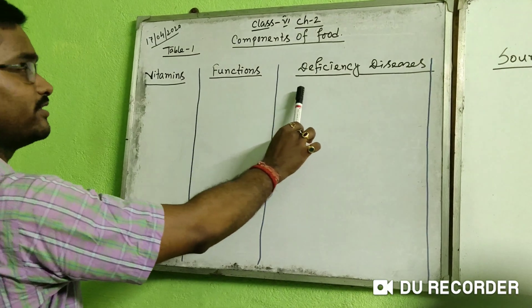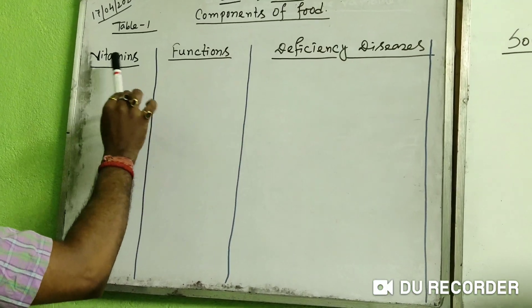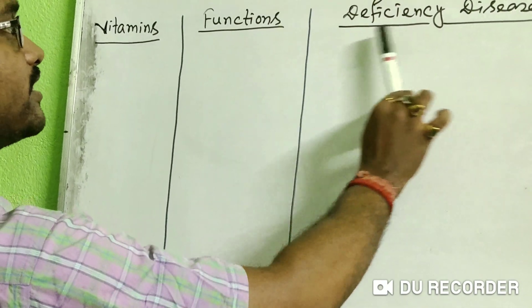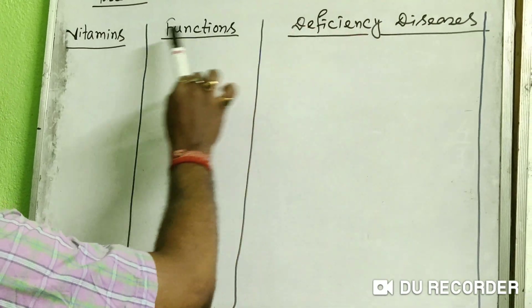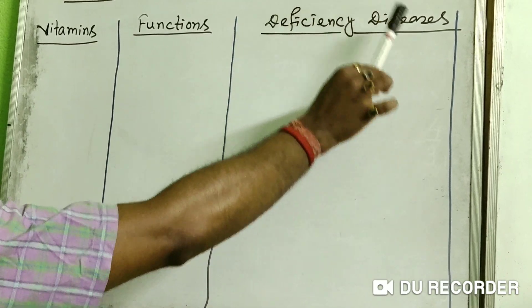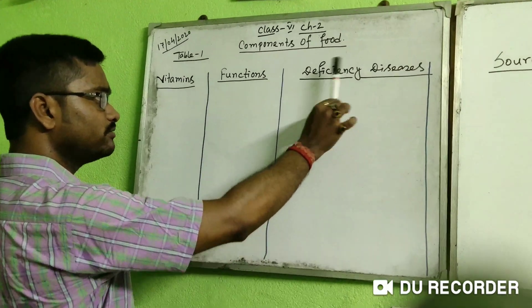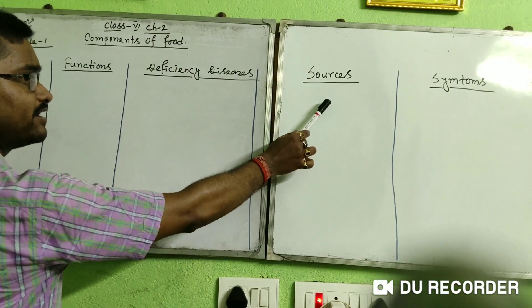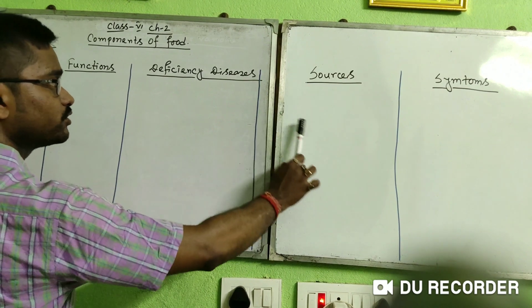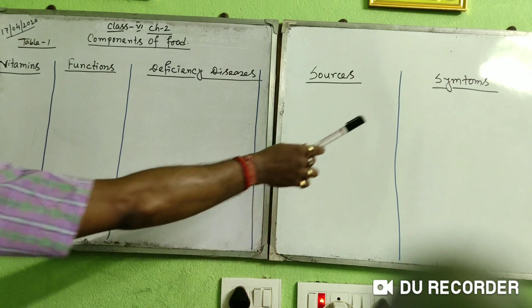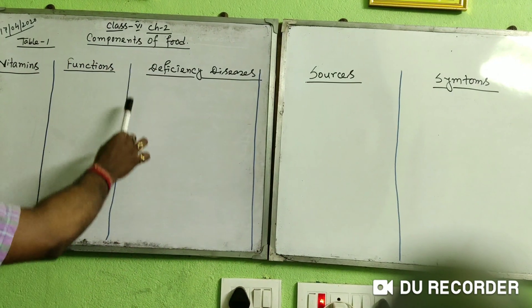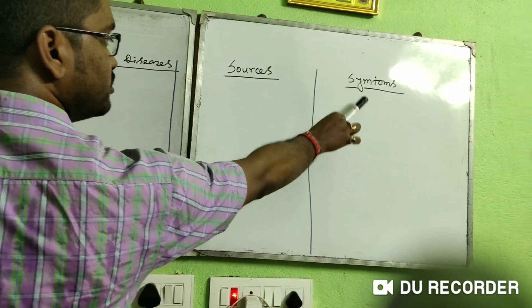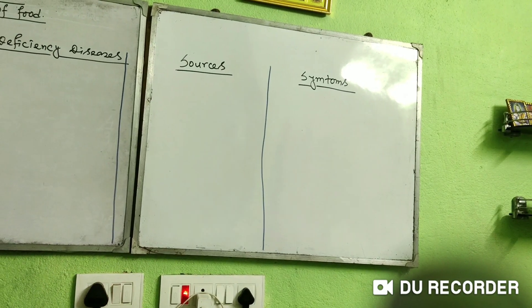The main keywords of this chapter are carbohydrates, proteins, fat, vitamins, minerals, roughage, and water. The table has the following columns: the individual name of the vitamin, their individual functions, the deficiency diseases caused by their absence, the sources whether plant or animal, and the symptoms that appear in the body due to deficiency.